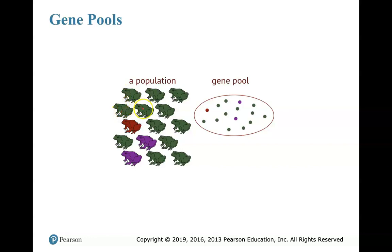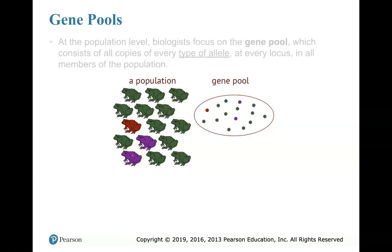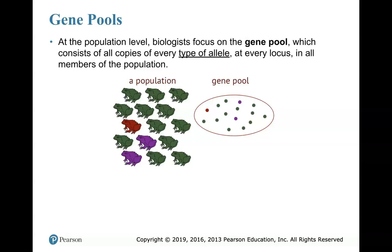Here's a population of frogs. I can see different traits — I have green phenotype, I have red, I have purple. A gene pool considers the population level, and biologists are more concerned with the gene pool than just looking at the population as a whole, because the gene pool consists of all copies of every type of allele in that population. I can actually see the frequency — how many green frogs, how many purple frogs, how many red frogs are occurring within that population.